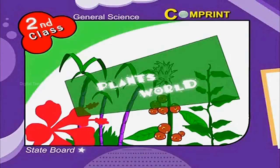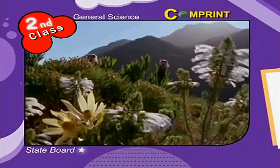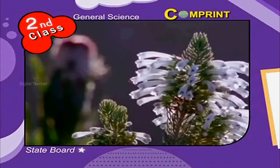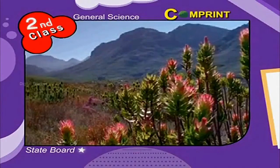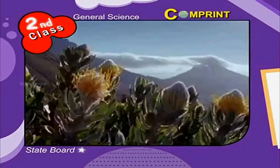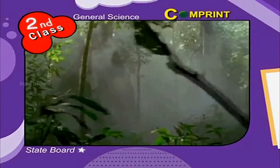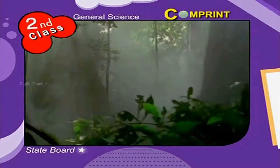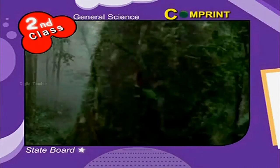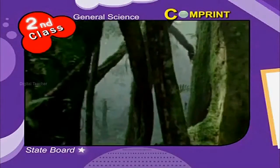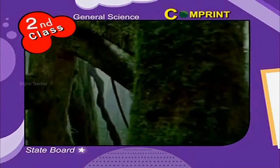Let us know the plants world. Plants are the first things that appeared on the earth millions of years ago. Plants are living organisms. They produce food by themselves with the help of air, water and sunlight. There are millions of species of plants on the earth. Come, let us learn about some of the plants which are generally known to us.